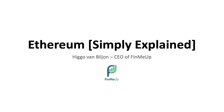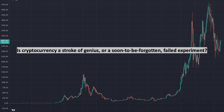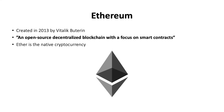Cryptocurrencies have taken the world by storm in the past decade — are they a stroke of genius or a soon-to-be forgotten failed experiment? This video will investigate the second largest cryptocurrency by market cap: Ethereum. Ethereum was conceived in 2013 by programmer Vitalik Buterin. It was built as an open source, decentralized blockchain with smart contract functionality, with Ether serving as the native cryptocurrency on the platform.